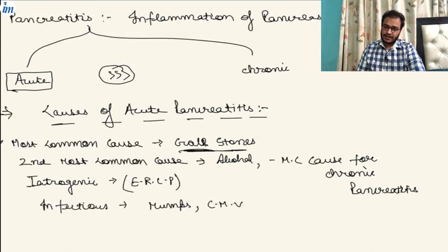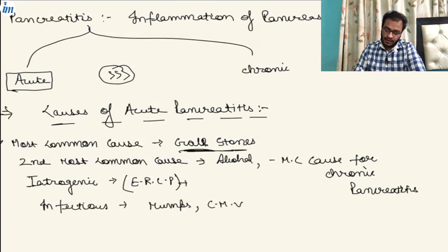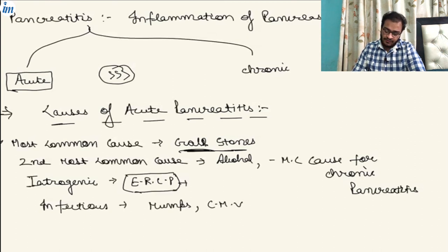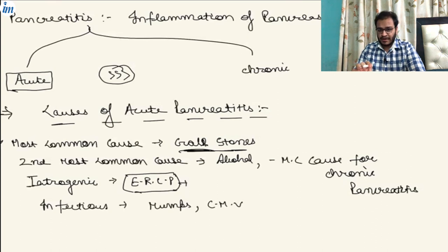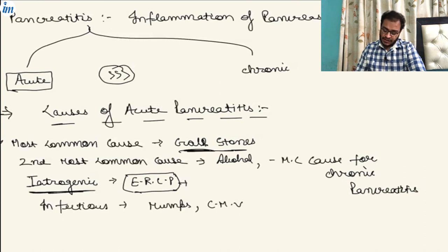Another cause is the iatrogenic cause. One procedure used to view the biliary ducts is ERCP. While performing the ERCP procedure, if any damage is accidentally done to the pancreatic ducts, it can cause pancreatitis. So iatrogenic causes include ERCP. Another cause is infectious — most commonly mumps and cytomegalovirus infections can cause pancreatitis.